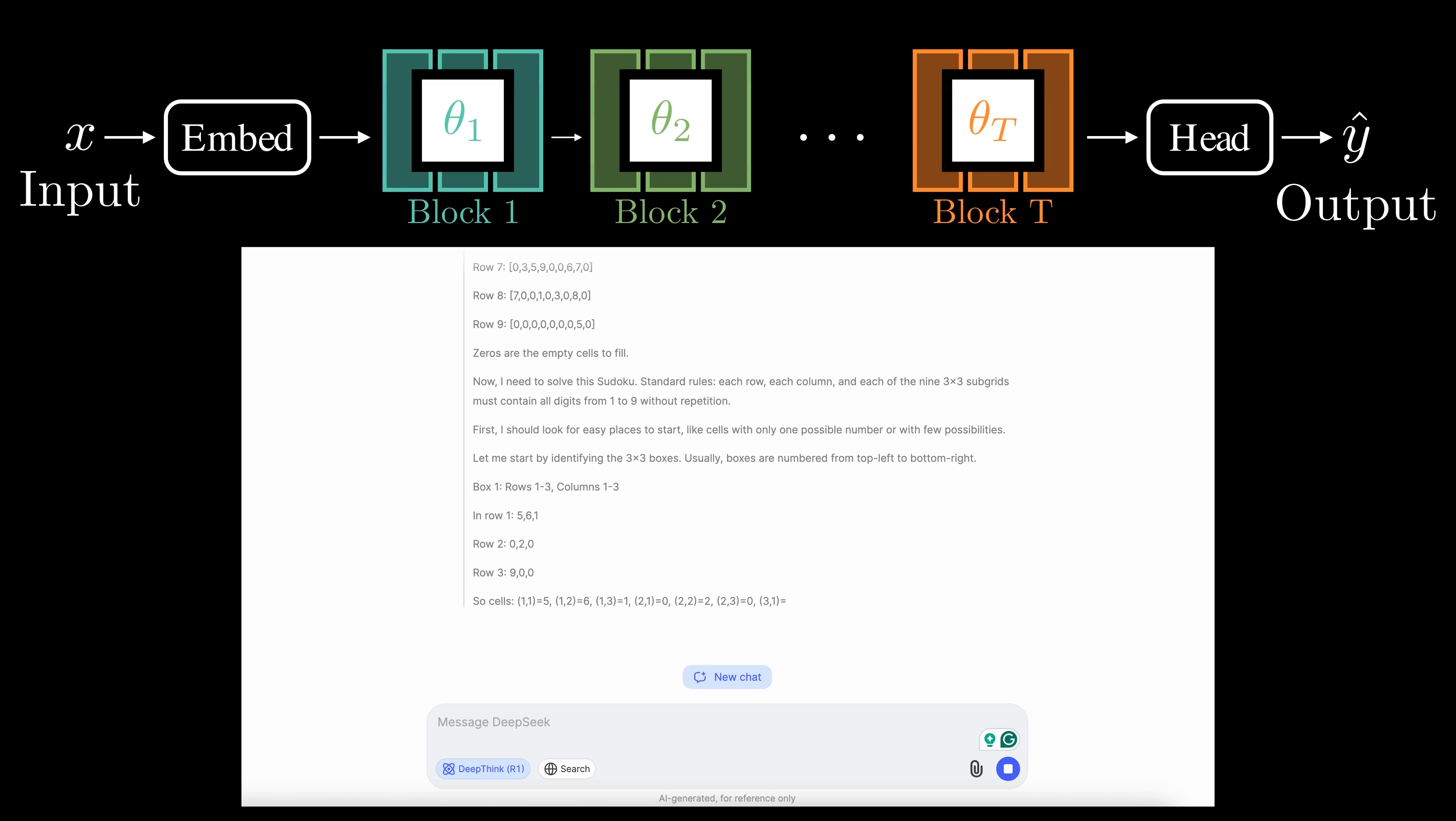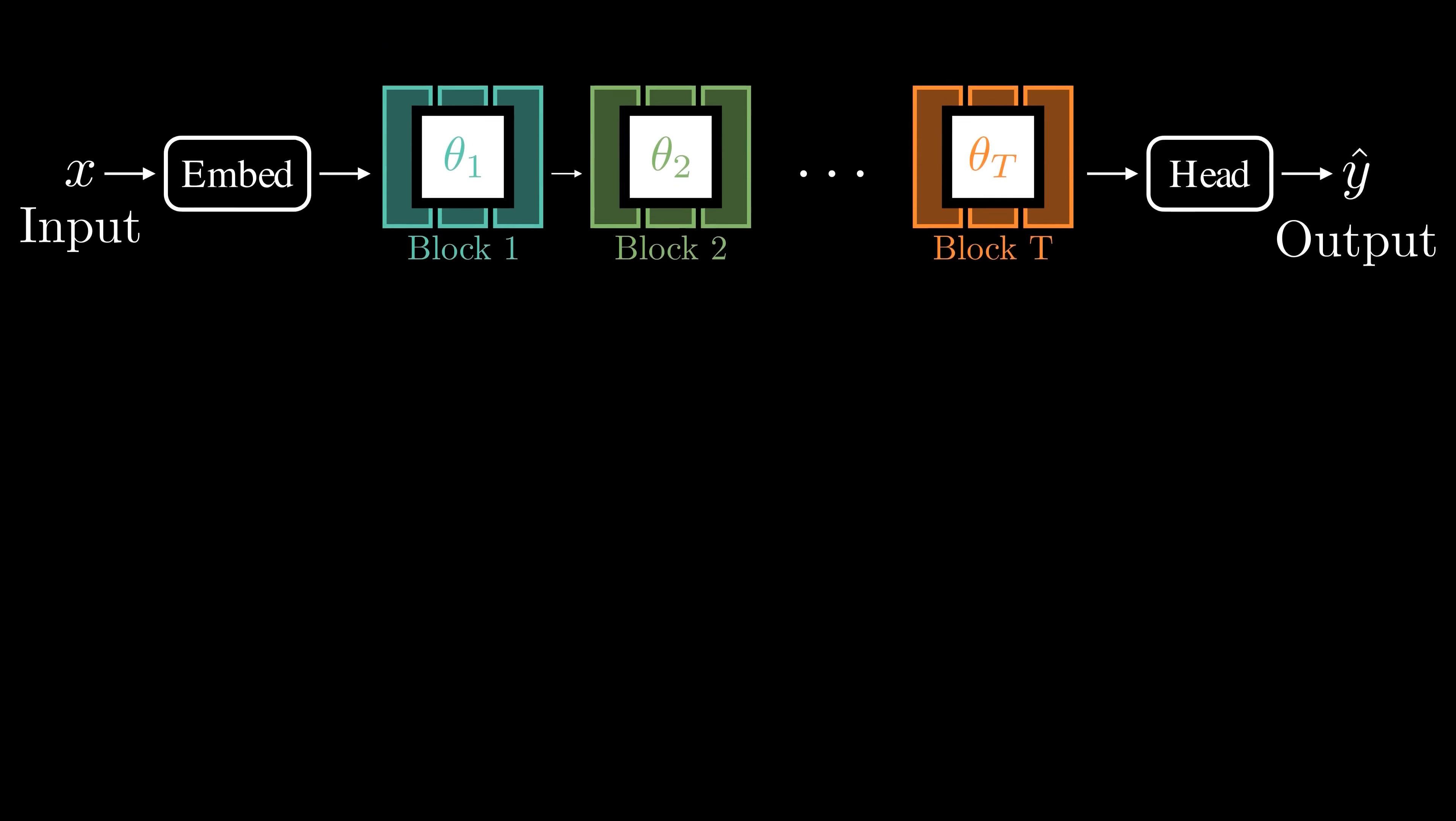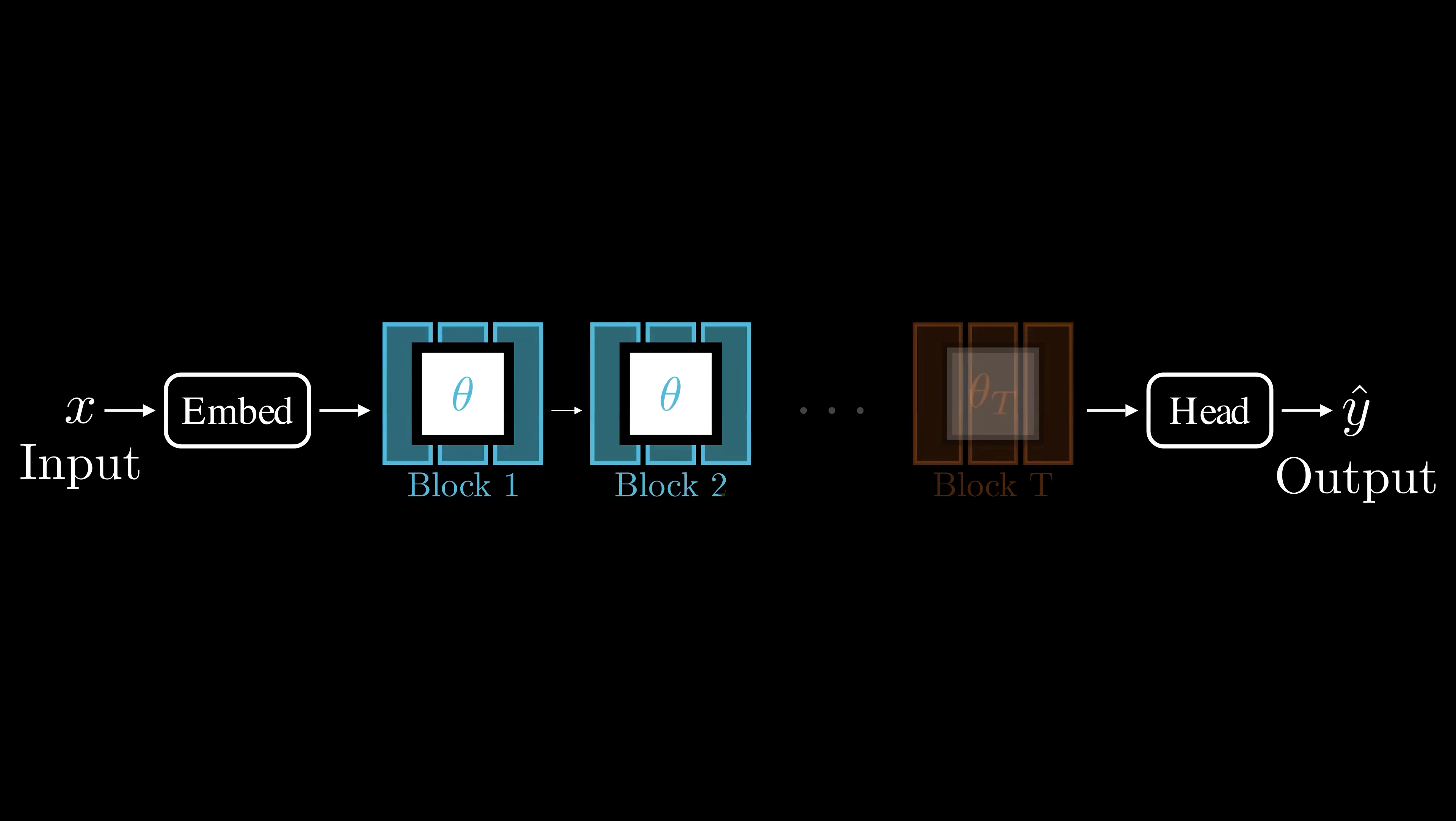As an alternative, we can use a recurrent network. In a recurrent architecture, each block reuses the same set of parameters.